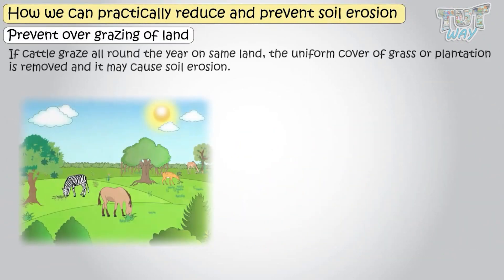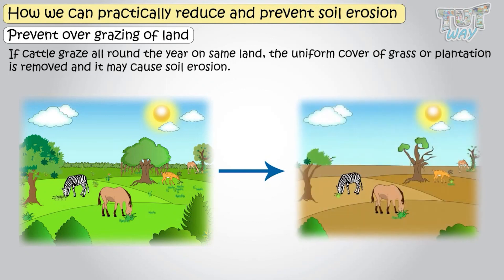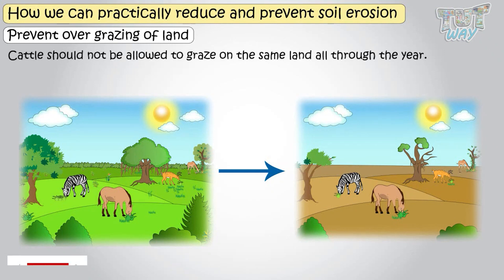If cattle graze all around the year on the same land, the uniform cover of grass or plantation is removed and it may cause soil erosion. So, cattle should not be allowed to graze on the same land all through the year.